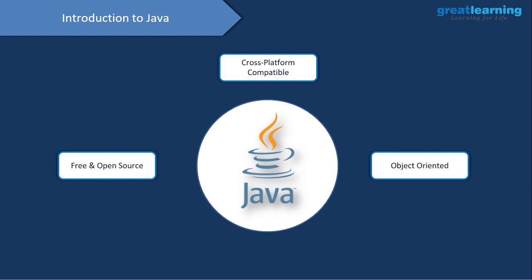Let's start by understanding what exactly is Java. Java is a free and open source software — it's just plug and play. All you have to do is install Java once and you can start working with it. Java is also a cross-platform compatible language, so you can run Java on any operating system. Java is also an object-oriented programming language.